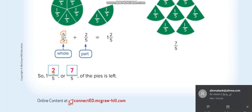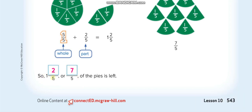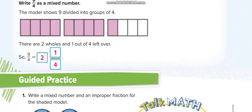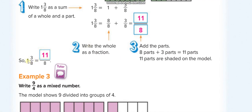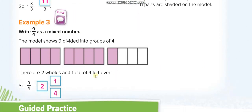Looking at the textbook example: converting the mixed number 1 and 2/5 to an improper fraction — 1×5=5, 5+2=7, giving 7/5. On the next page, converting 1 and 3/8: 1×8=8, 8+3=11, giving 11/8. Then converting 9/4 to a mixed number: two 4s fit into 9 (2×4=8), remainder 1, giving 2 and 1/4.